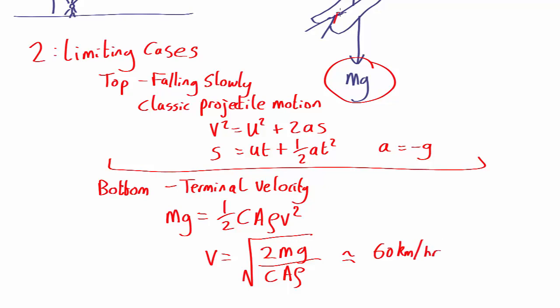If you don't have a wingsuit to increase your area, then it's more like 200 kilometers per hour, which is why jumping off tall buildings without a parachute or wingsuit is not a good idea.